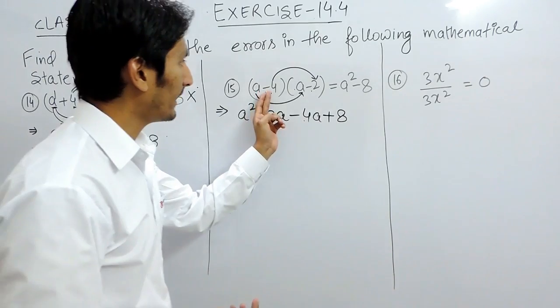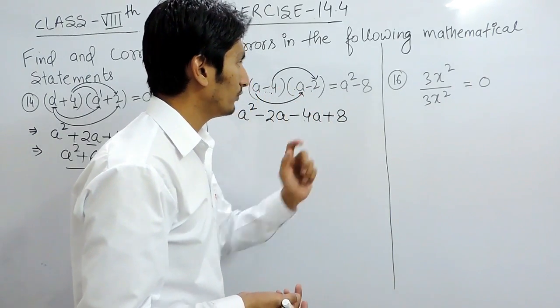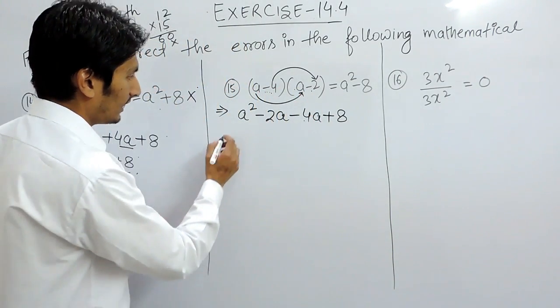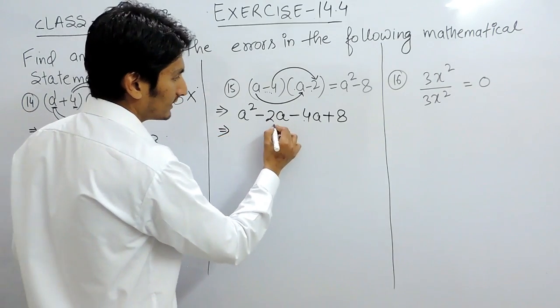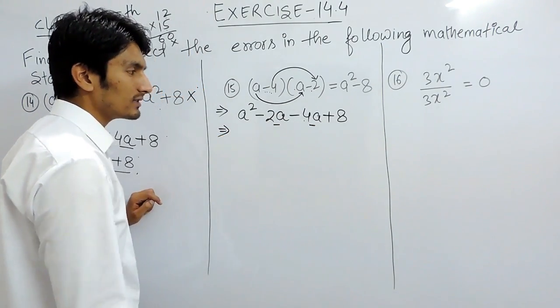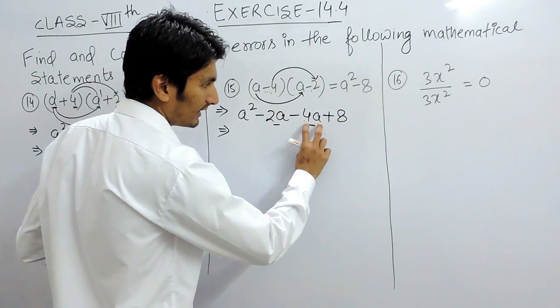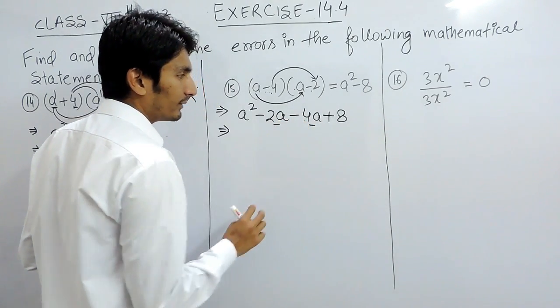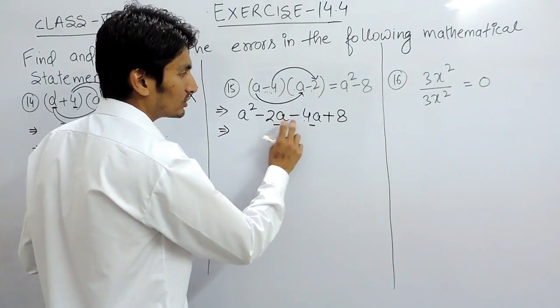This is what I have already told, that minus minus whenever multiplied will give plus. Now further solving it, this and this are like terms because here also a and here it is also a. The variable is same. These are like terms, can be solved.